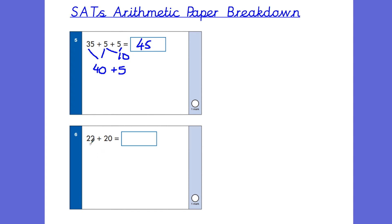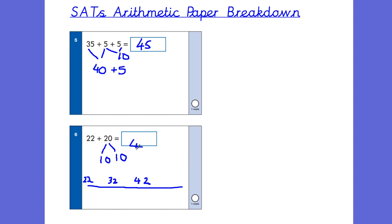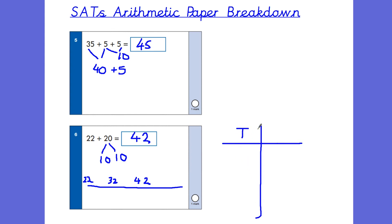Number 6: 22 add 20. Once again we are counting on. You could say 20 is made up of 2 tens. So start with 22, add 2 tens: 22 becomes 32, then add another 10, giving 42. There is another way involving drawing a place value chart, which I'll show for some of the other questions — these ones can be done by counting on in 10s.